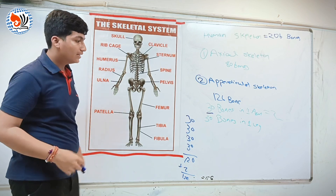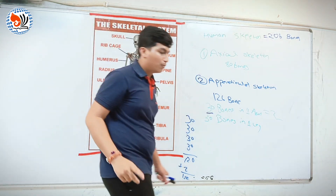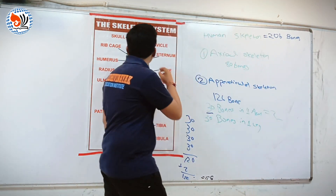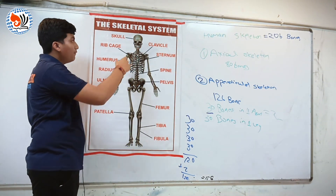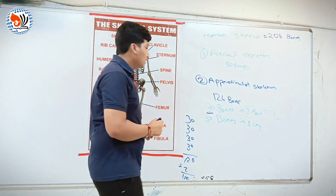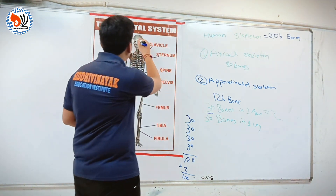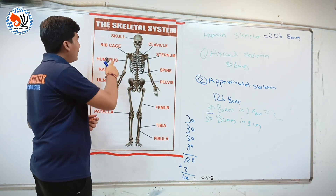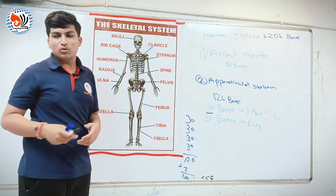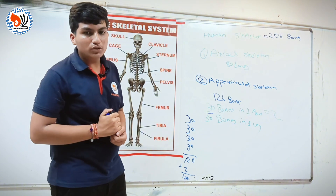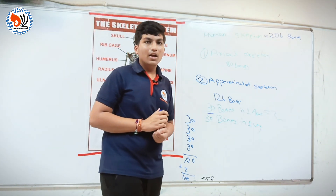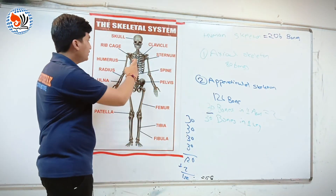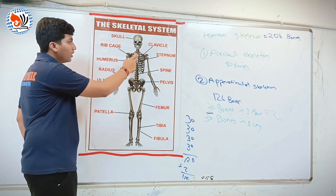The skull has 2 types of bone: cranium and facial bones. In ribcage there are 24 ribs in total, and there is the sternum.